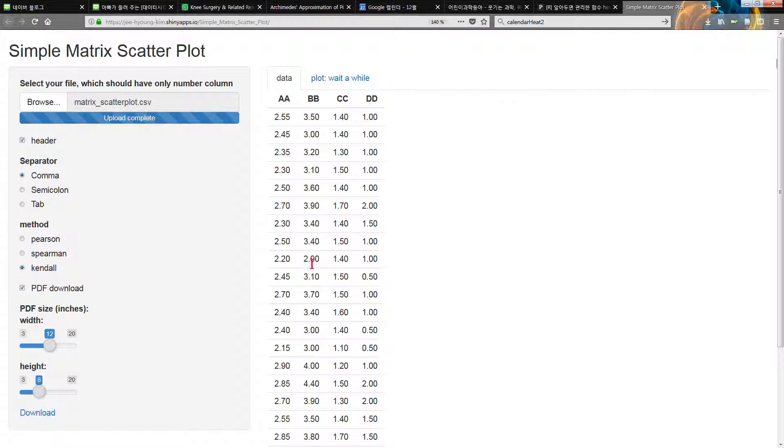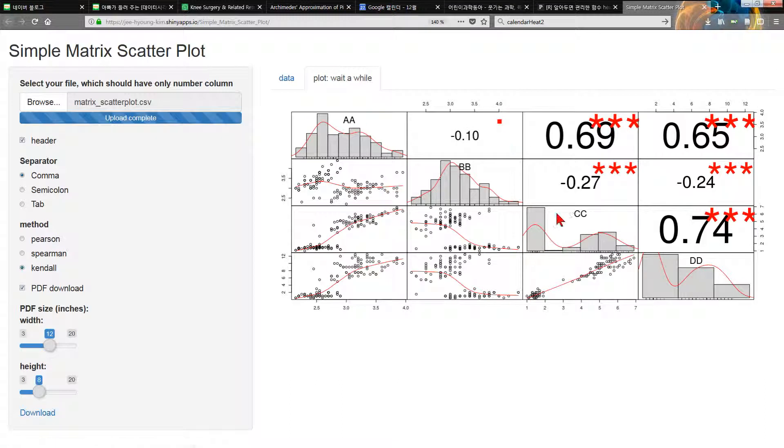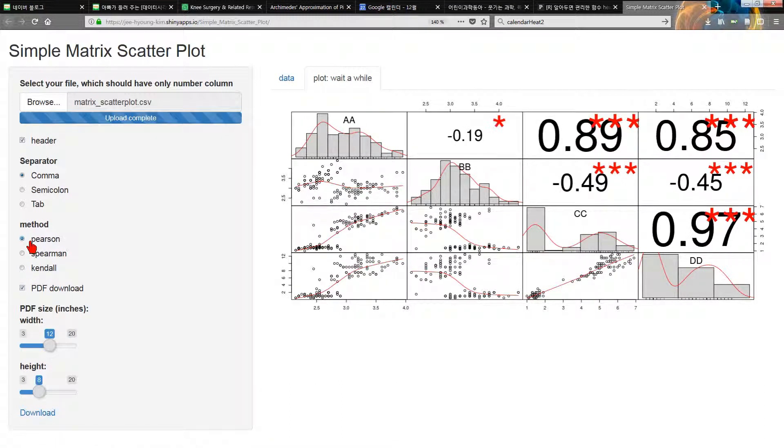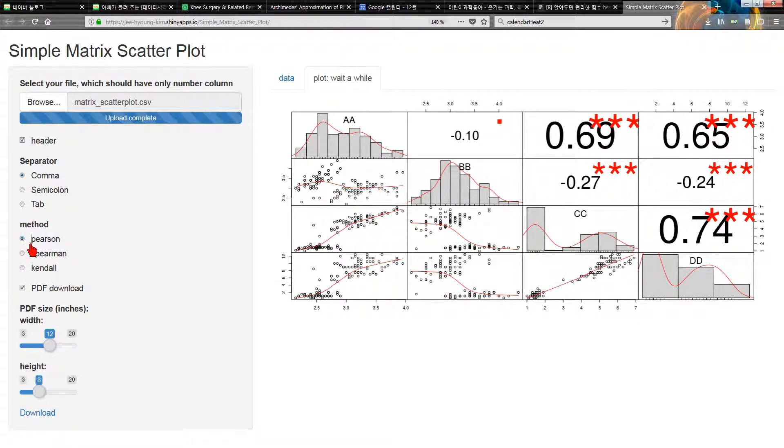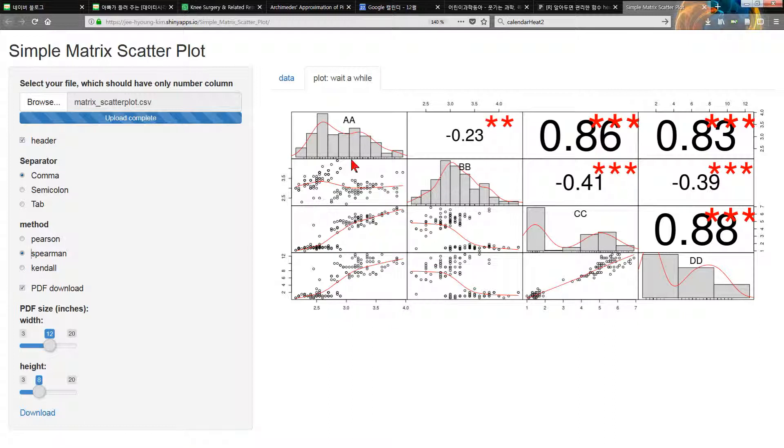And then you can make a scatter plot easily. And there is the Pearson correlation, and Spearman correlation, and Kendall correlation. Every time you select the plot, the plots do not change.